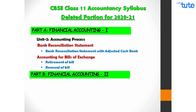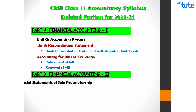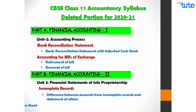Next is Part B Financial Accounting 2, under which we have Unit 3 Financial Statements of Sole Proprietorship from Complete and Incomplete Records. Under Incomplete Records, the following have been deleted: Difference between Accounts from Incomplete Records and Statement of Affairs, and the Preparation of Trading, Profit and Loss Account and Balance Sheet.